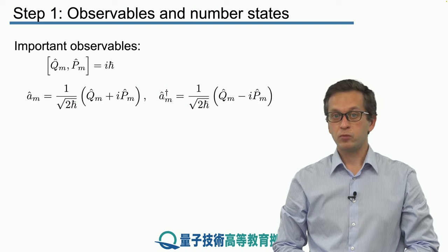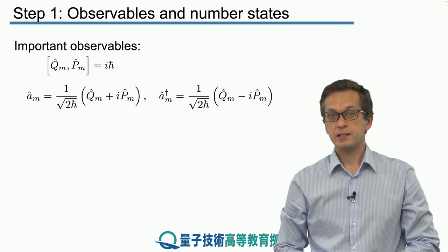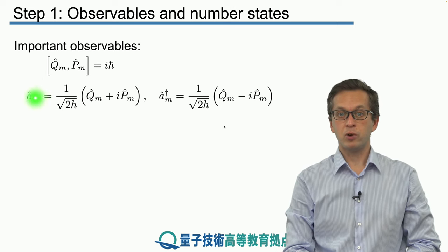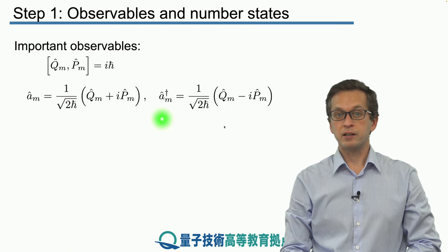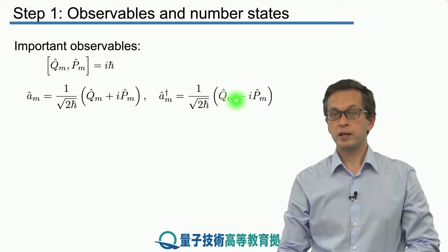On the other hand, what cannot be observed are the creation and annihilation operators. A is the annihilation operator given as a combination of Q and P, whereas A†, its Hermitian conjugate, is given by Q minus iP.